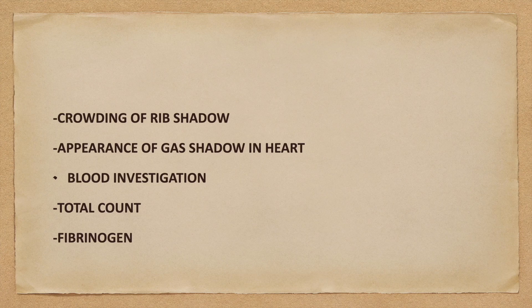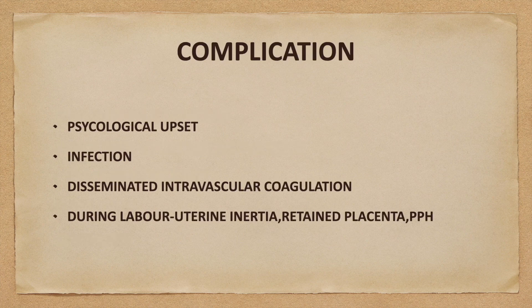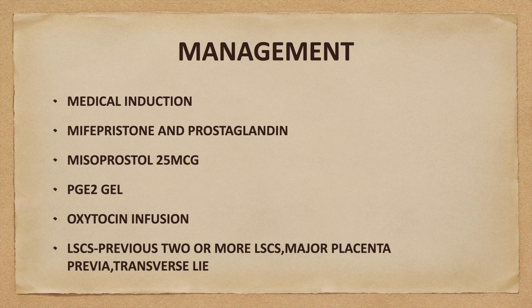Blood investigations like total count and fibrinogen should be done. Complications include psychological upset, infection, disseminated intravascular coagulation, and during labor there will be uterine inertia, retained placenta and postpartum hemorrhage.